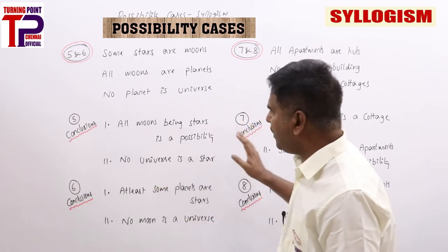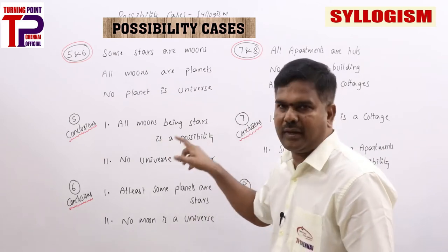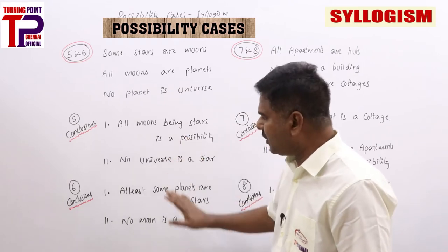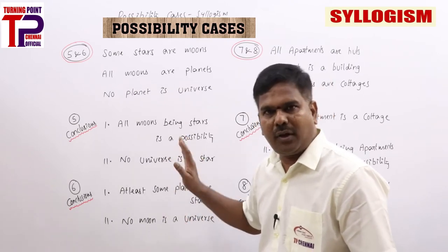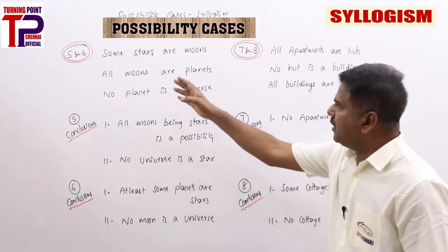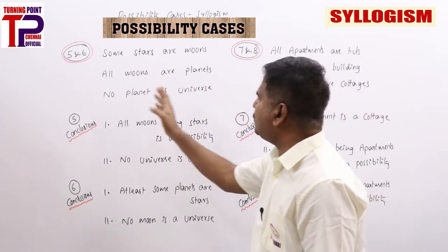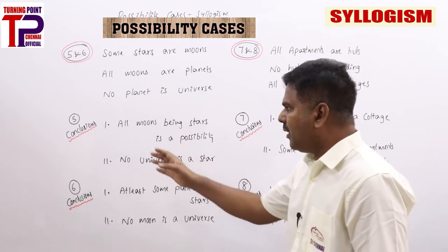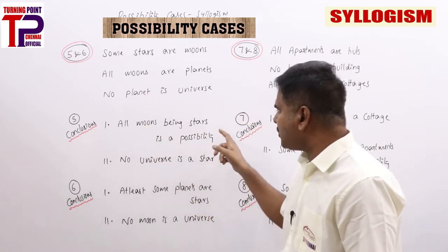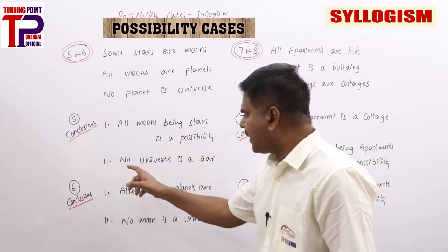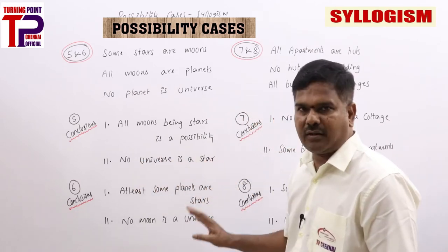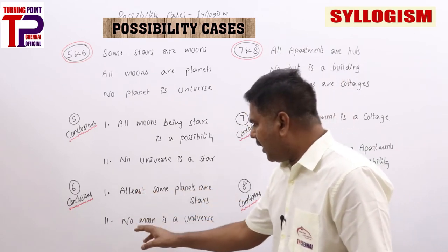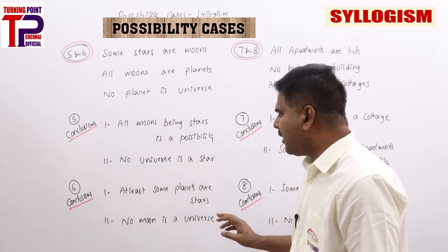Questions 5 and 6 share statements: some stars are moons, all moons are planets, no planet is universe. Question 5 conclusions: (1) all moons being stars is a possibility, (2) no universe is a star. Question 6 conclusions: (1) at least some planets are stars, (2) no moon is a universe. Note: 'at least' means I statement — same as 'some planets are stars.'